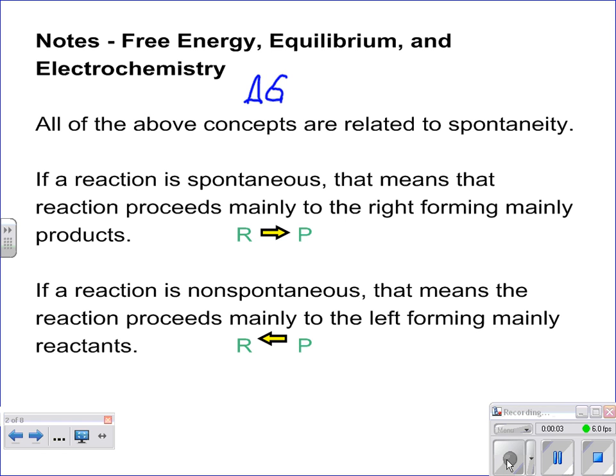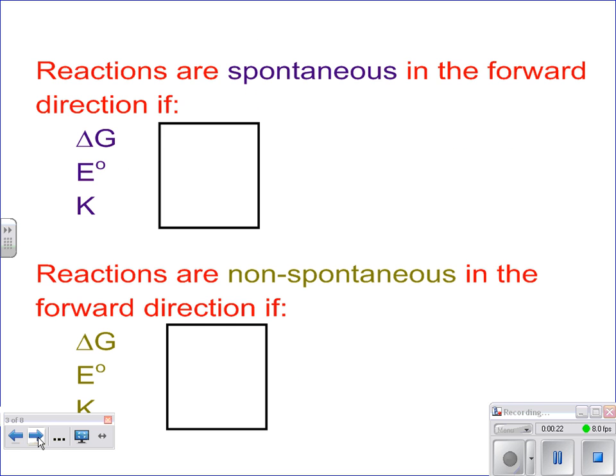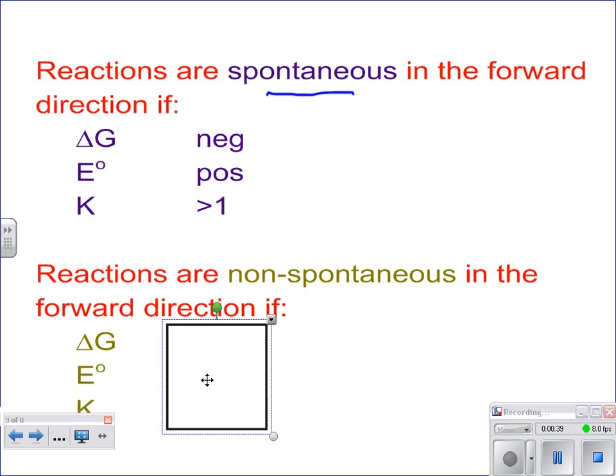Okay, Gibbs free energy, equilibrium, and electrochemistry can all be related to spontaneity. Remember that a reaction is considered spontaneous if it moves in that forward direction, meaning it creates more products. It's considered non-spontaneous if it moves in the reverse direction or creates more reactants. For it to be spontaneous, delta G would have to be negative, your E values would be positive, and your K values would be greater than 1. The opposite would be true for non-spontaneous reactions.